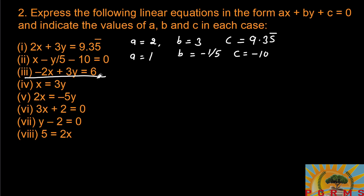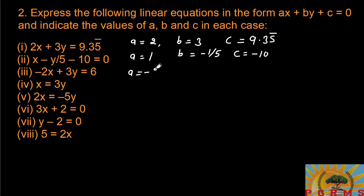Now part three. Here ax becomes the x term, by is the y term, and bringing 6 to the left side makes it negative. So a equals minus 2, b equals plus 3, and c equals minus 6.